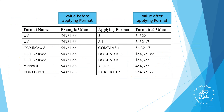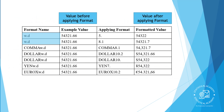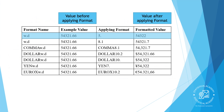SAS has many formats you can use. Let's look at some of the most common formats and see the effect they have on numeric values. The w.d format specifies a width and number of decimal places. The 5. format is the same as 5.0, so no decimal places are displayed — SAS rounds the displayed value to the nearest integer. By applying the 8.1 format, the value is displayed rounded to one decimal place.